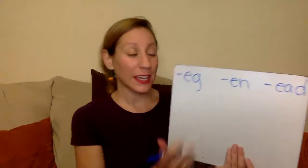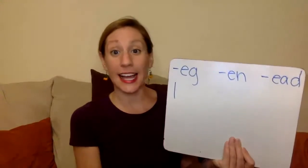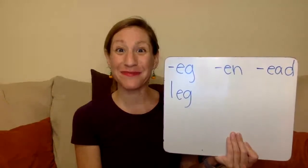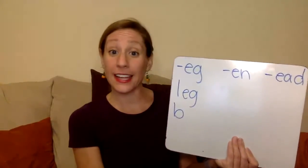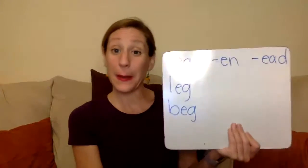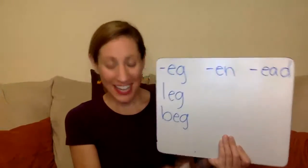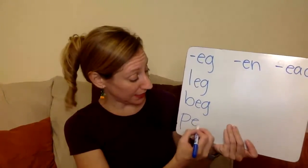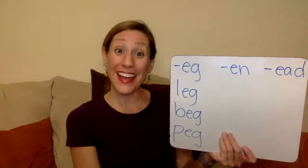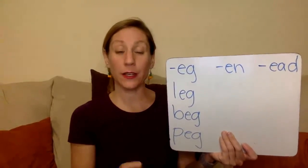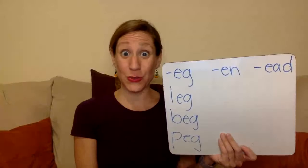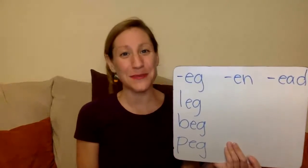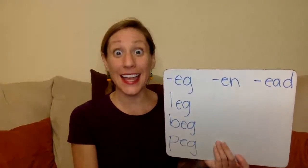Let's do some together. If I put L at the beginning of egg, we get leg. If I put B at the beginning, we get beg. And if I put P at the beginning, we get peg. Leg, beg, peg. Were any of those the words you thought of? If not, go ahead and let me know what word you thought of in the egg family.